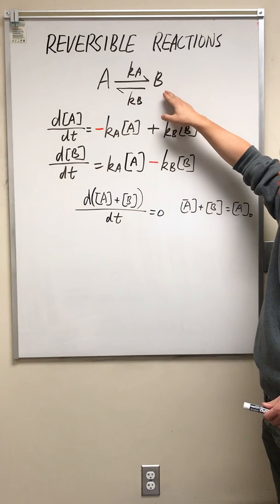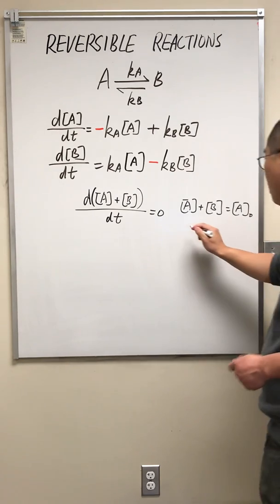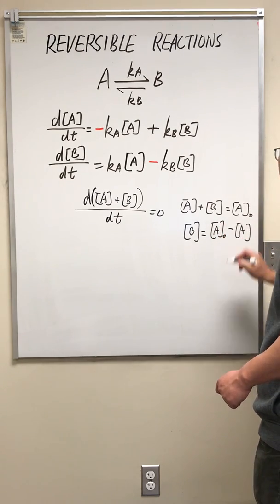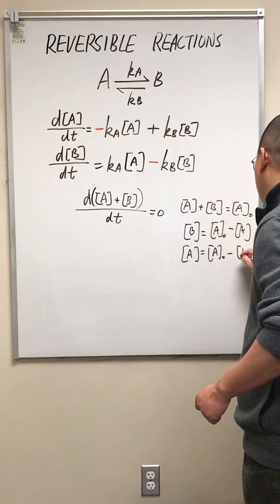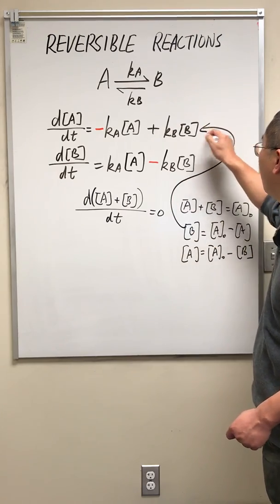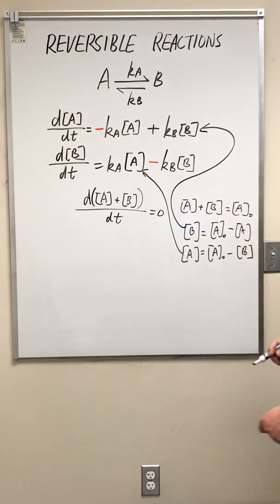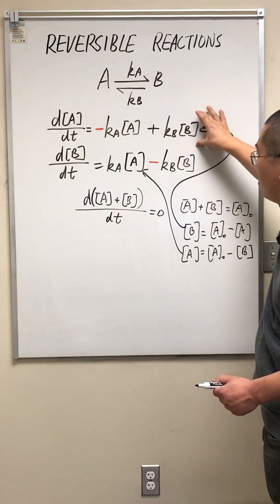Assuming there is no B in the reaction system at the beginning, A plus B equals A0. We can rewrite B as A0 minus A, or A equals A0 minus B. We can plug this into the rate equation. Either way, we will be able to solve a differential equation that contains only two variables: one is time, and the other is either the concentration of A or the concentration of B.